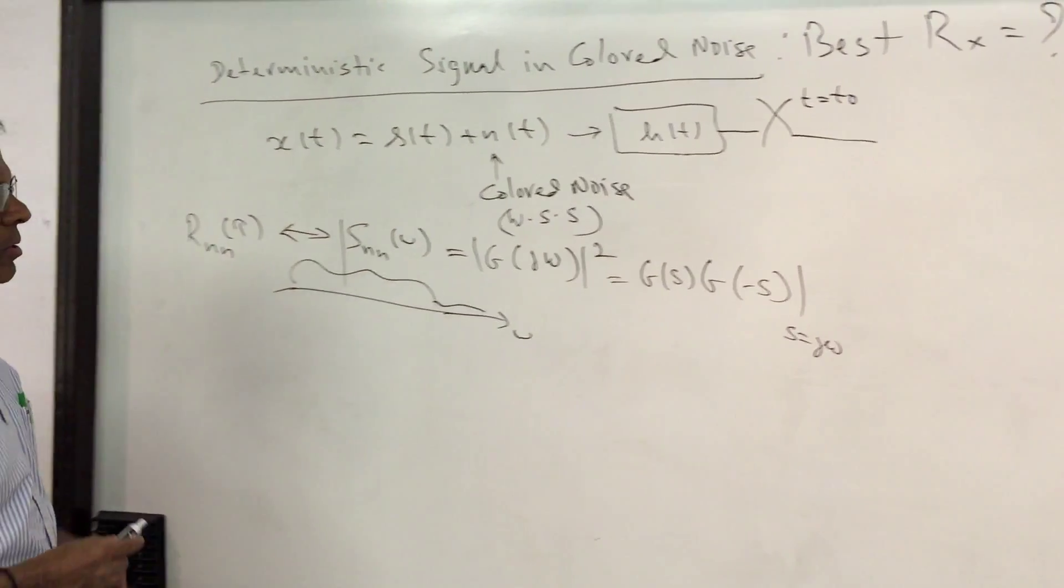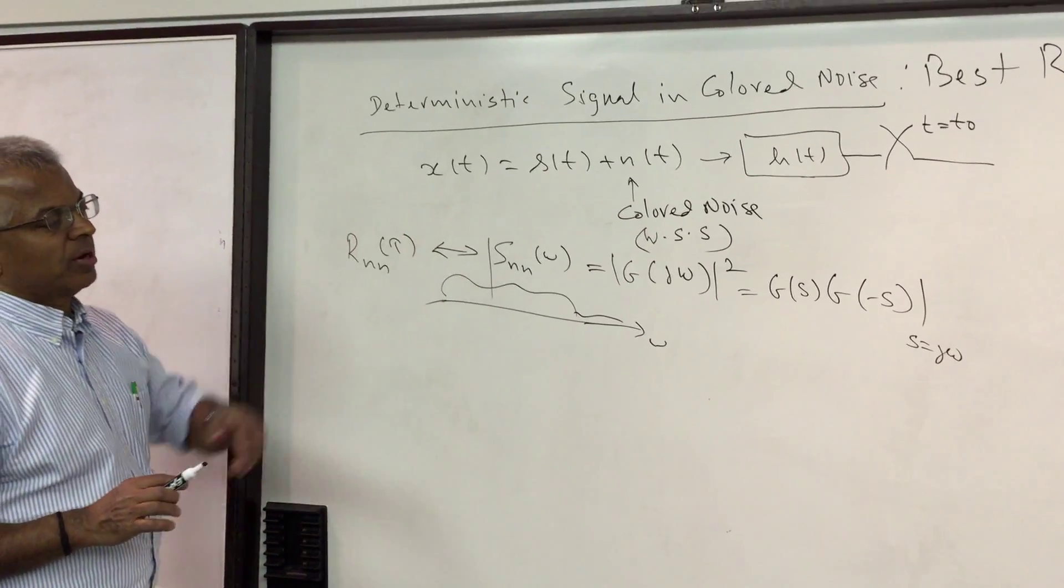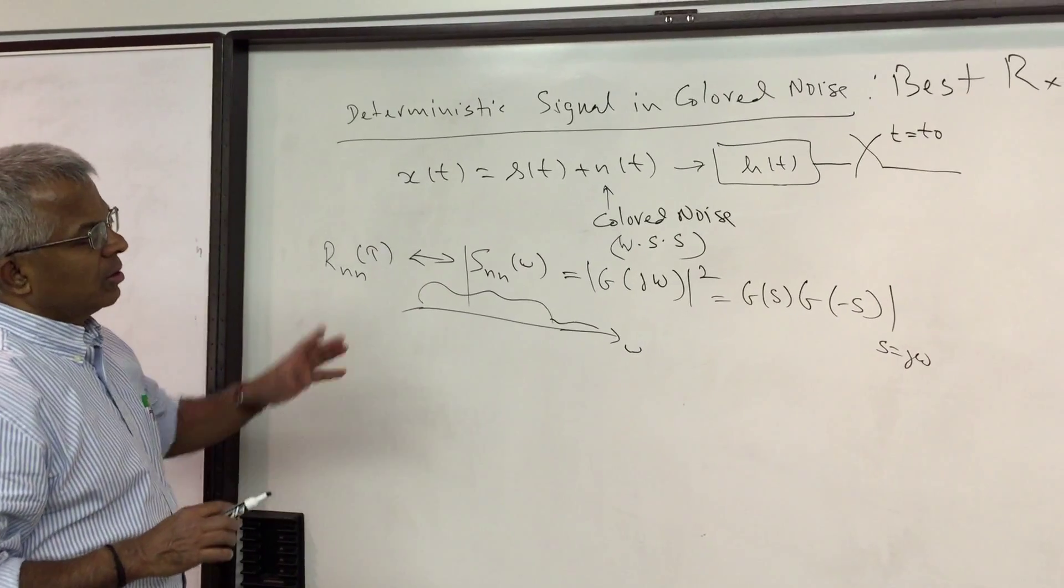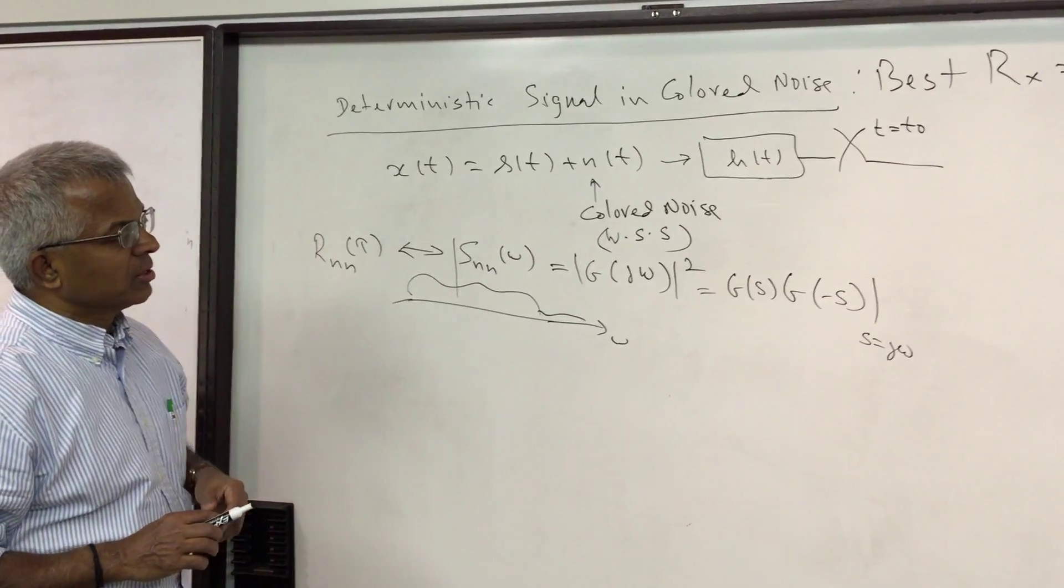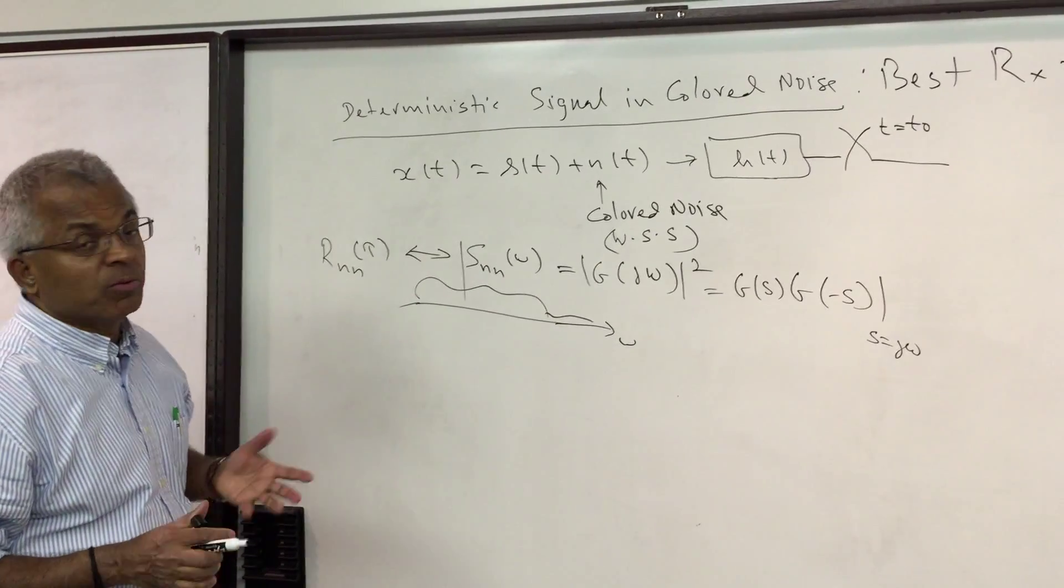So also in the rational case it is quite easy - you can do it by the pole-zero allocation. Since this filter needs to be, we are going to use the filter, we want it to be stable.